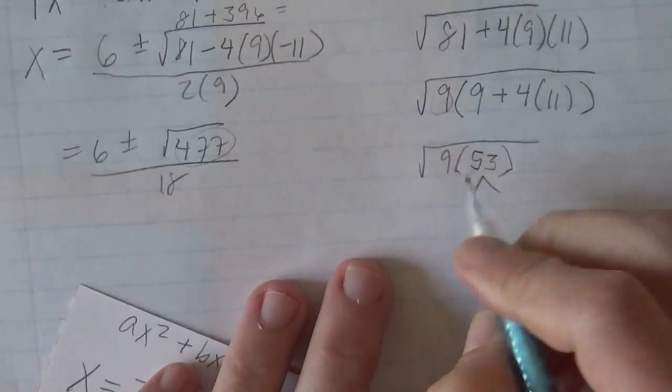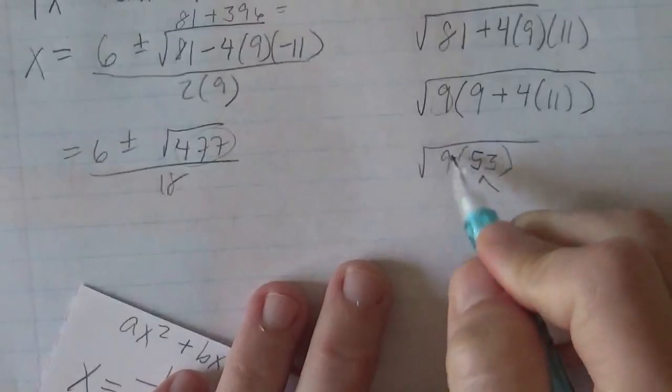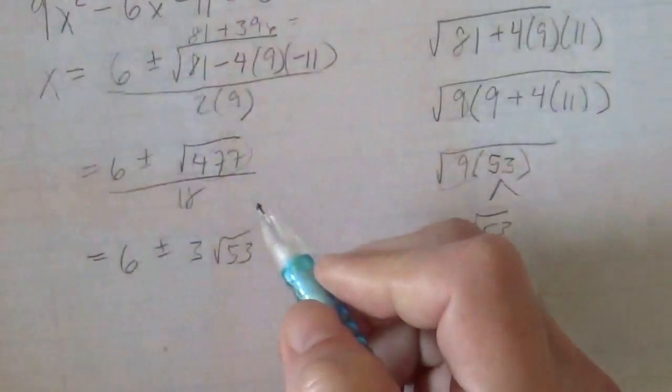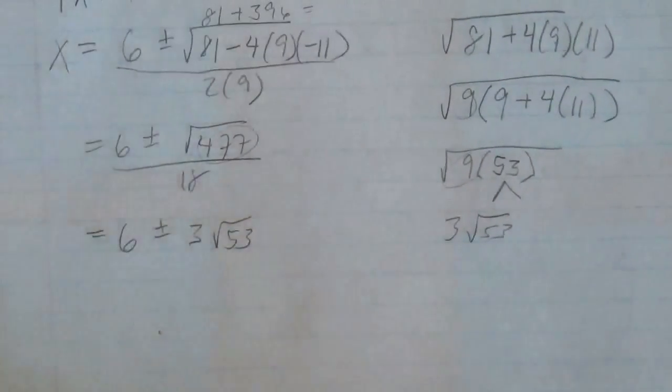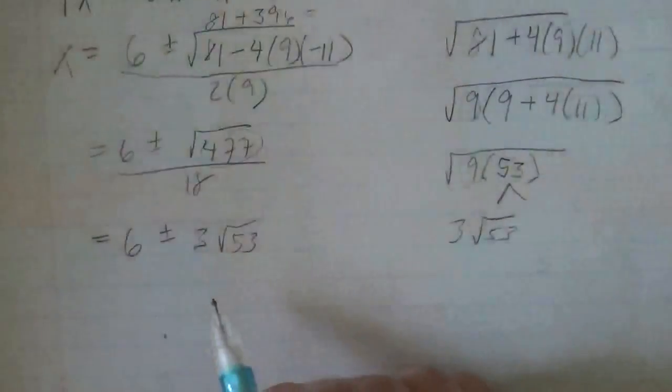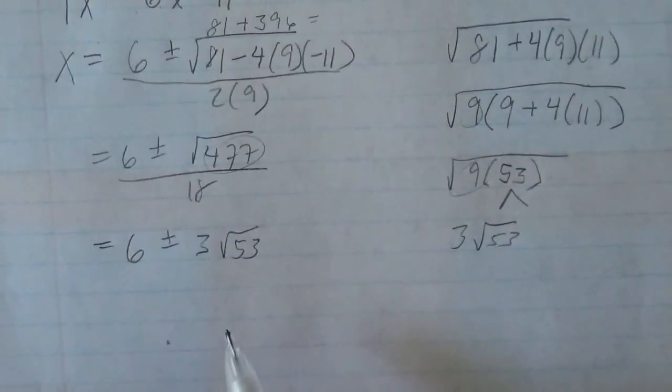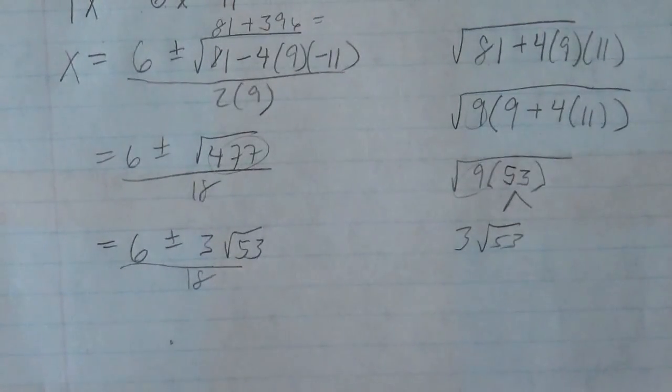53 is, is that going anywhere? I don't think that's going anywhere. So now you can see that this will be 3√53. So this will be 6 ± 3√53. I lost something, went too fast. Let's see. Okay. Hmm. All right, let's go.